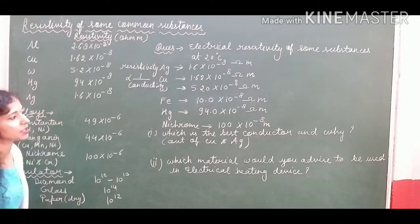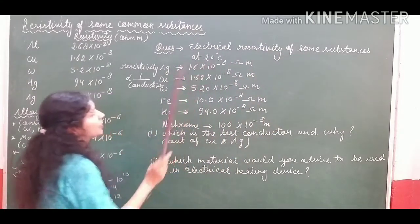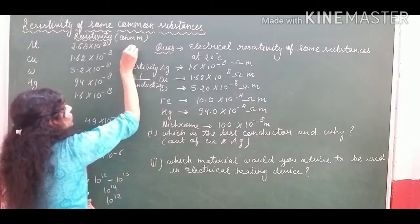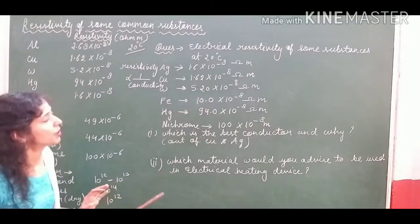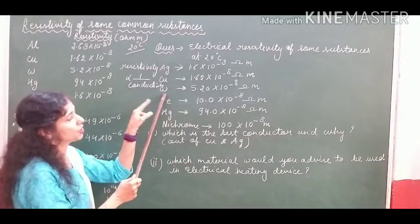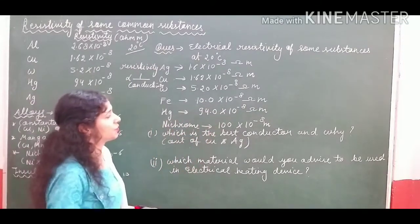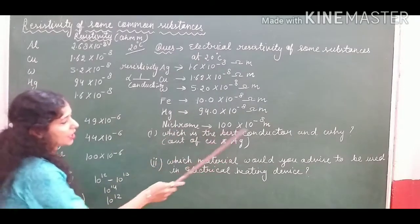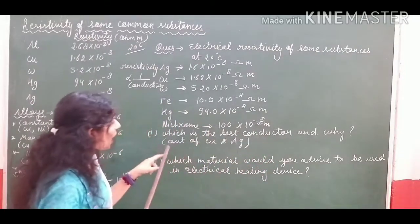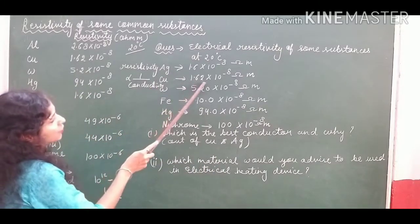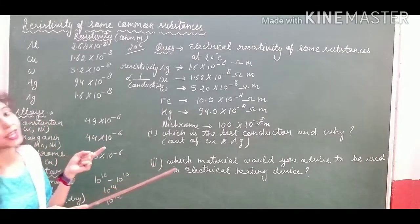Now let's talk about a question that may be asked during examination. Electrical resistivity of some substances at 20°C: resistivity of silver is 1.62 × 10⁻⁸ ohm meter and copper is 1.62 × 10⁻⁸ ohm meter. Which is the best conductor and why, out of copper and silver? Copper has 1.62 × 10⁻⁸ and silver has 1.62 × 10⁻⁸. So which is having the lesser value? Silver.